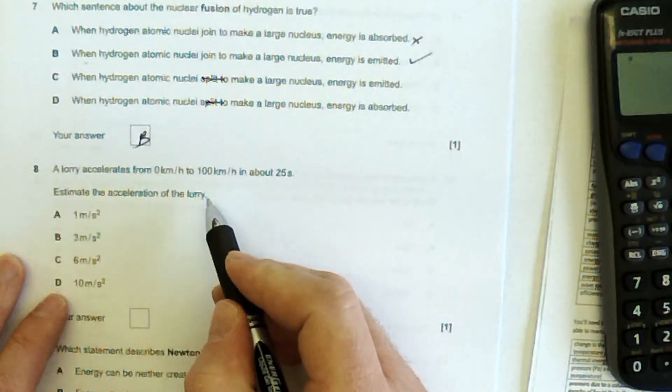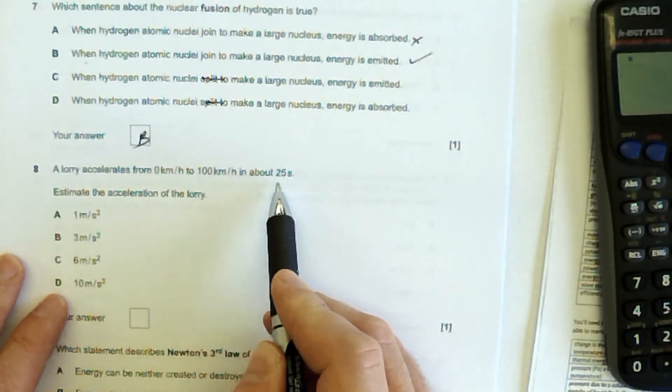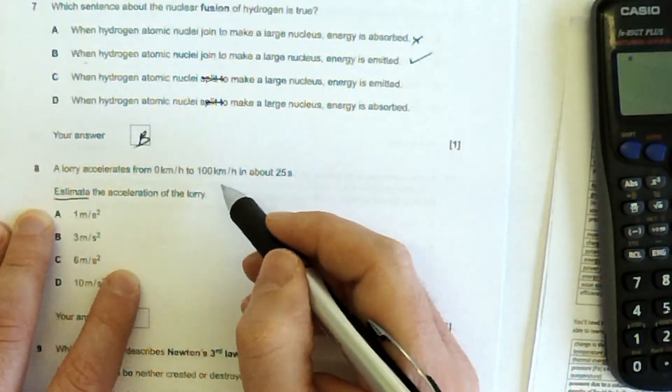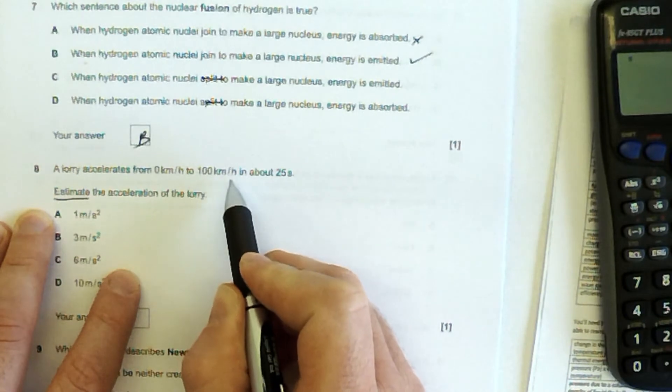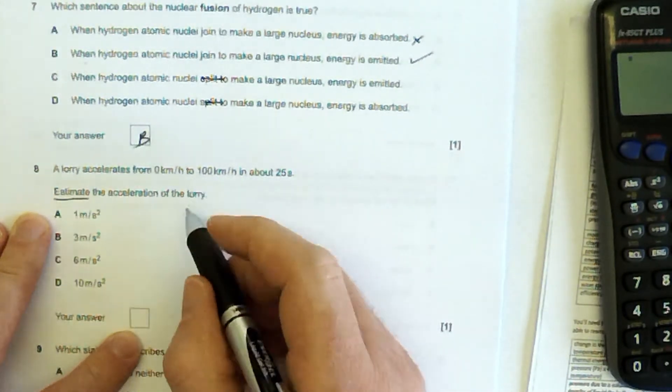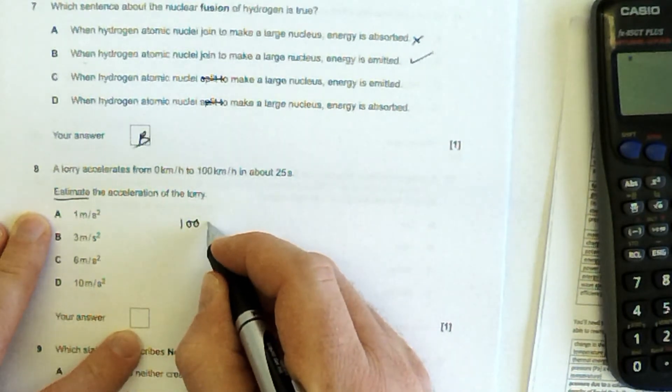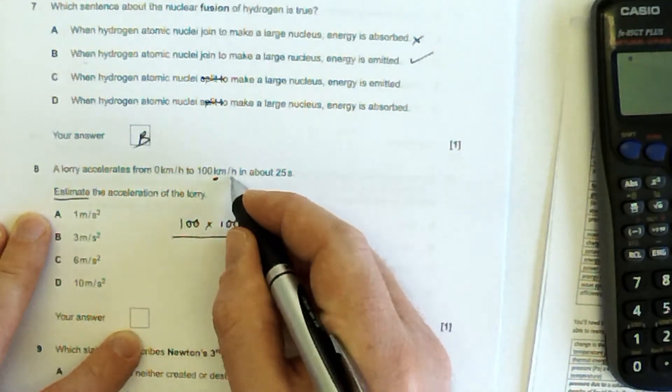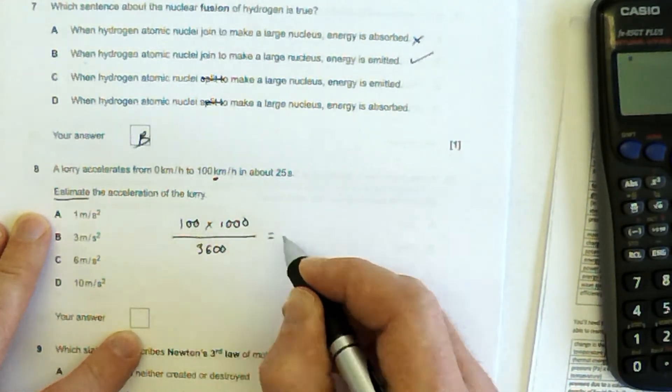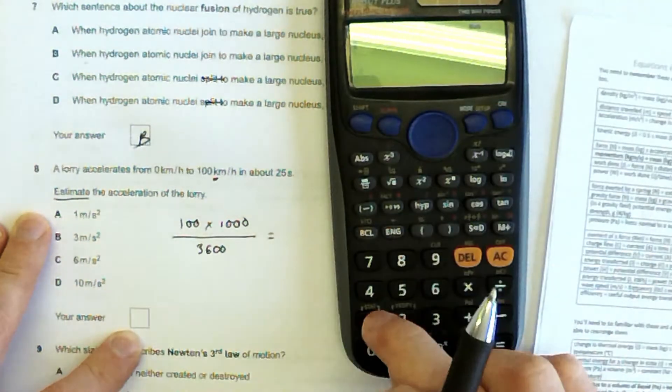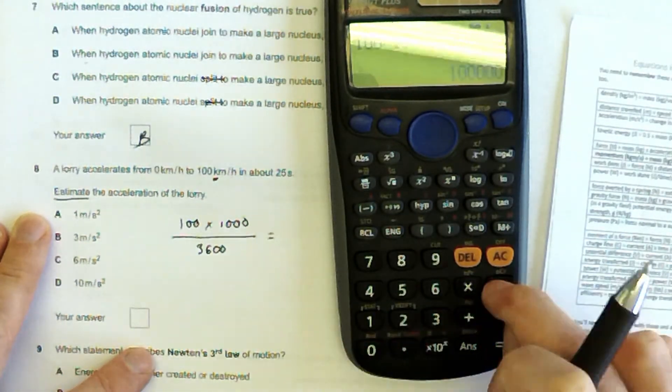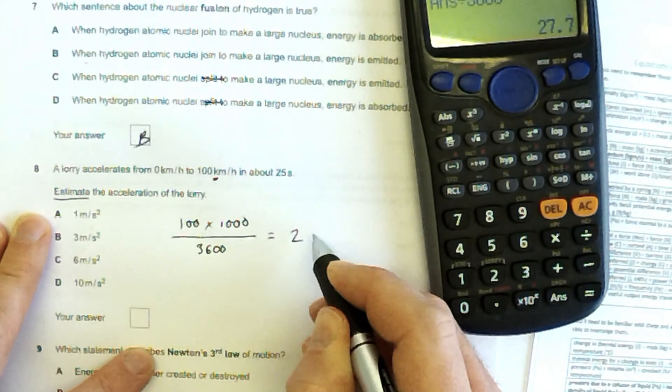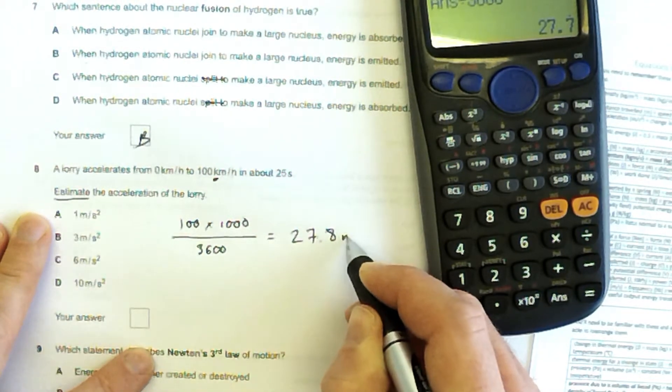A lorry accelerates from 0 km per hour to 100 km per hour in about 25 seconds. Estimate the acceleration of the lorry. So this is quite a tricky one, because we're going to have to convert this into metres per second before we go ahead and do it. So let's just figure out. So that is 100 times 1,000 metres per hour, and hours has 3,600 seconds in it. So let's just go ahead and do that. 100 times 1,000 divided by 3,600 gives me a speed of 27.8 metres per second.